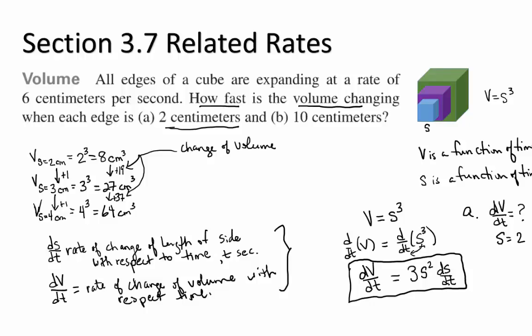What else do we need? ds dt, the rate at which s is changing. Because we're talking about related rates, we're going to need to know one rate to figure out the other. Coming back up here. What other piece of information did they give us? All edges of a cube are expanding at a rate of six centimeters per second.